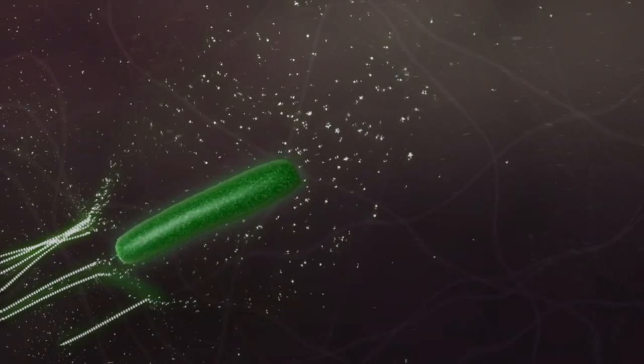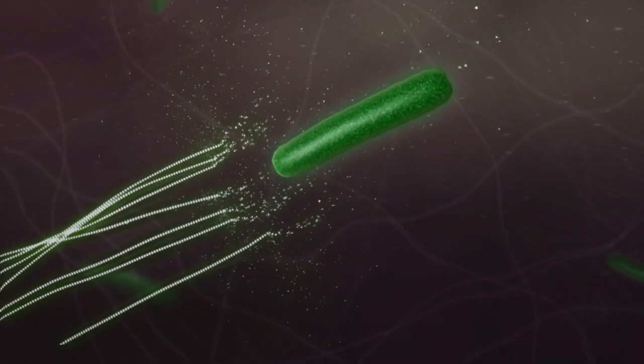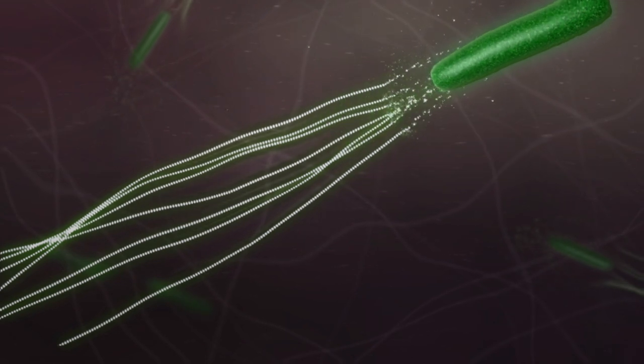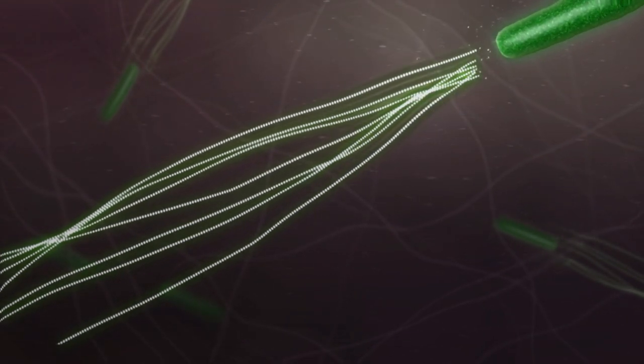Once internalized, Shigella lyses the vacuole and begins to rapidly reproduce while recruiting host actin to form actin comet tails, used to propel the bacteria within the host cellular environment.